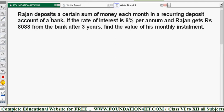So here the question is: Rajan deposits a certain sum of money each month in a recurring deposit account of a bank. If the rate of interest is 8% per annum and Rajan gets Rs 8088 from the bank after 3 years.